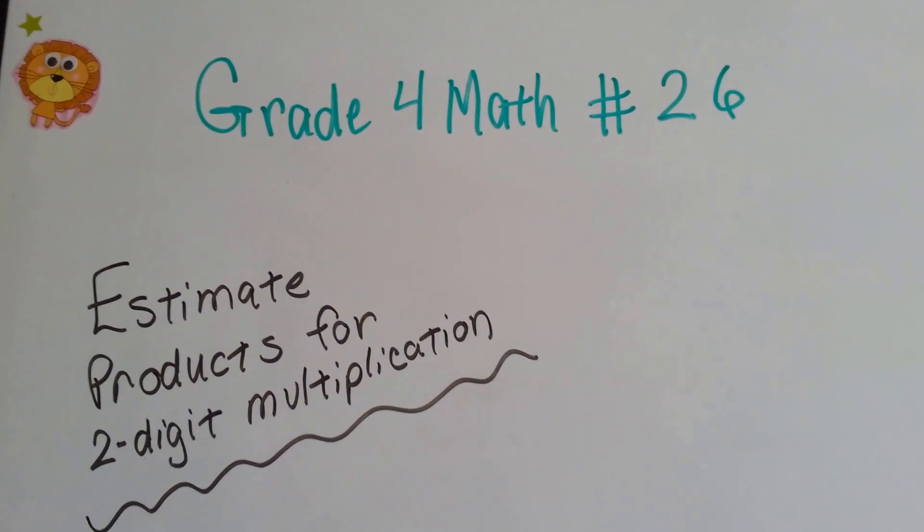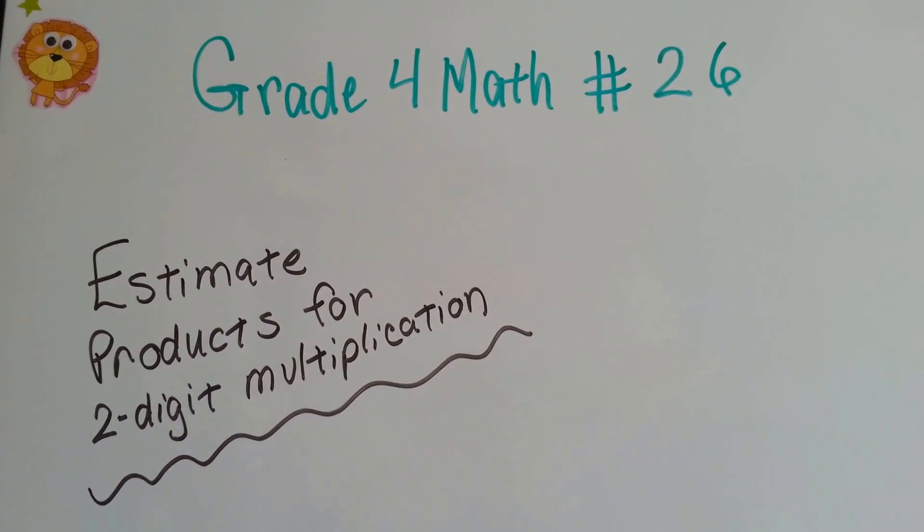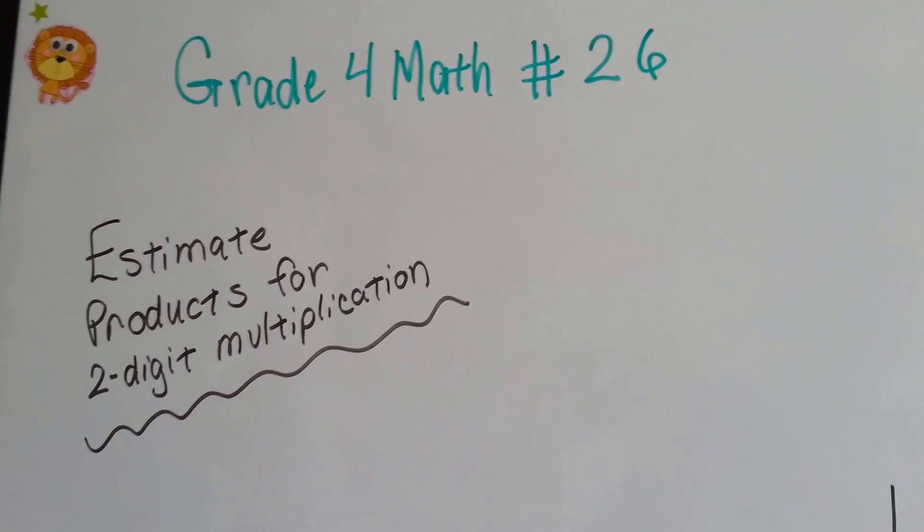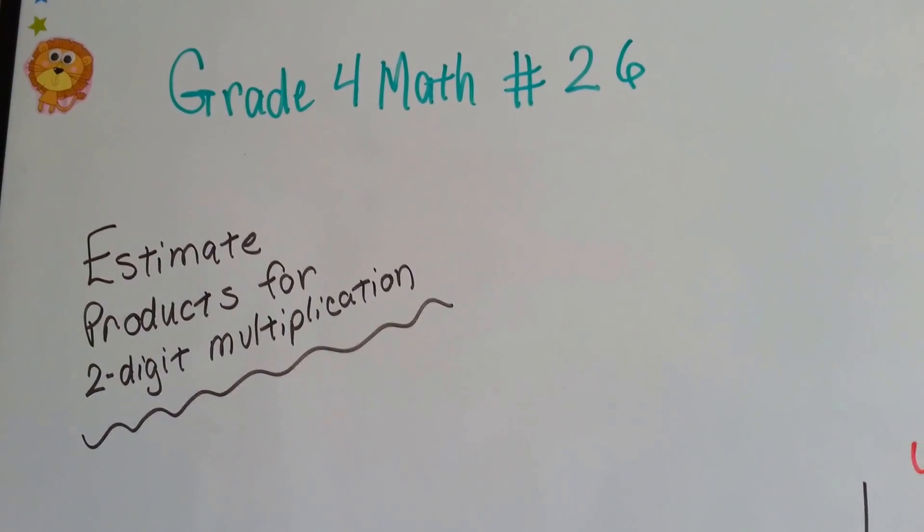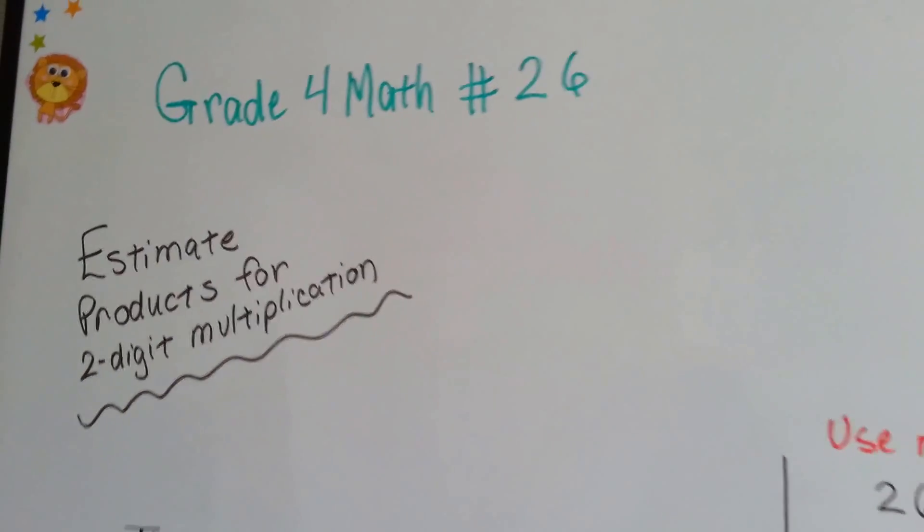Grade 4 math number 26. Estimate products for two-digit multiplication. We've been doing one-digit multiplication. Now we're starting to do two-digit multiplication. Ones and tens place.